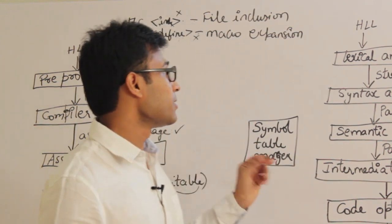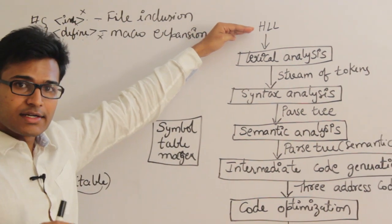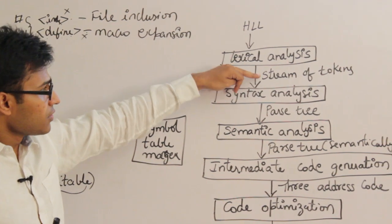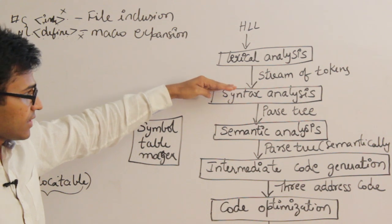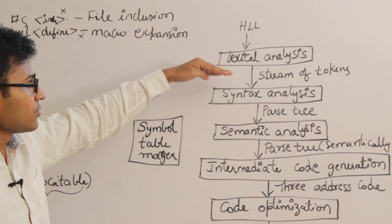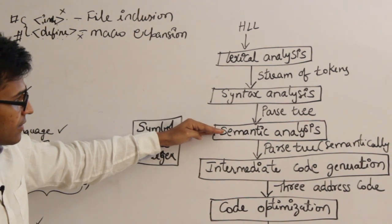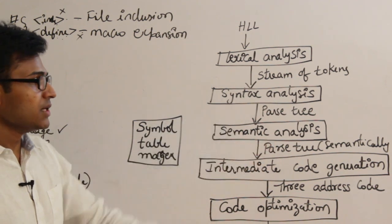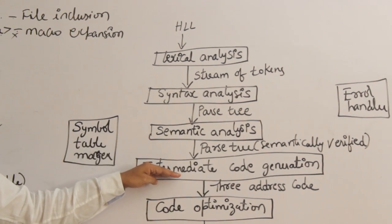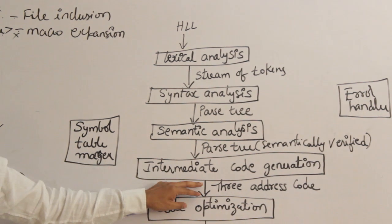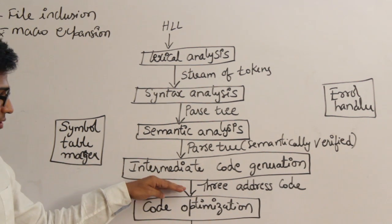The first phase is lexical analysis. The lexical analysis phase will take the program, read it, and convert the program into tokens — also called a stream of tokens. This stream of tokens will be given to the syntax analyzer, also called a parser. The syntax analyzer is going to take the tokens and convert them into a parse tree. The parse tree will be given to semantic analysis, which verifies whether the parse tree is meaningful or not — that is called a semantically verified parse tree.